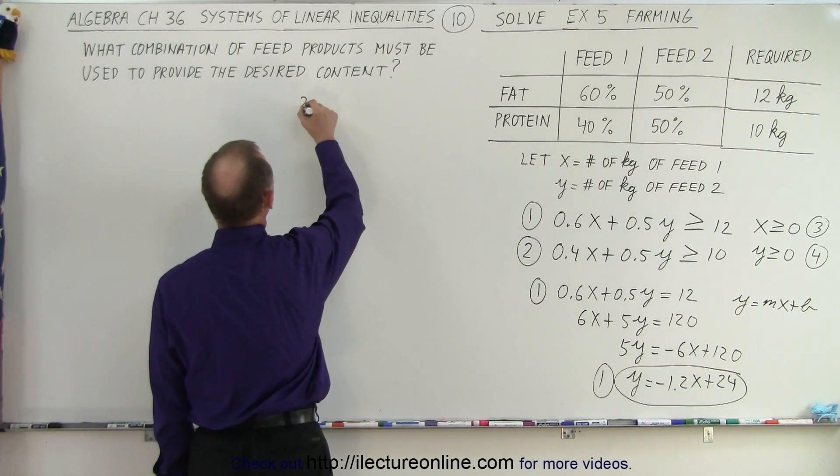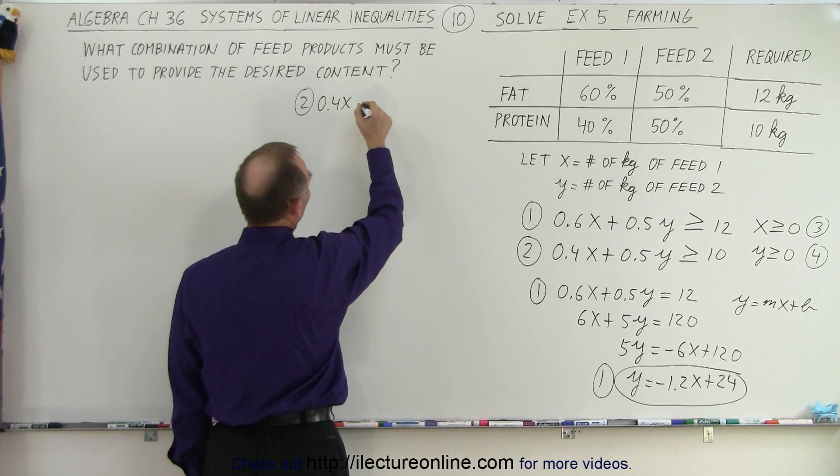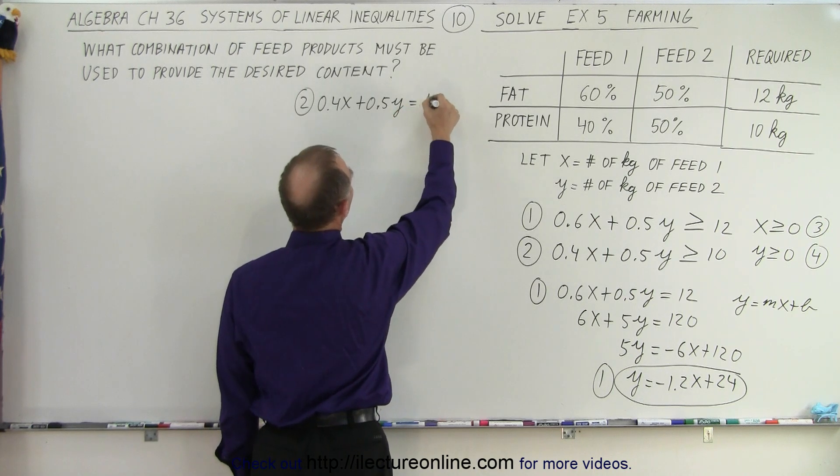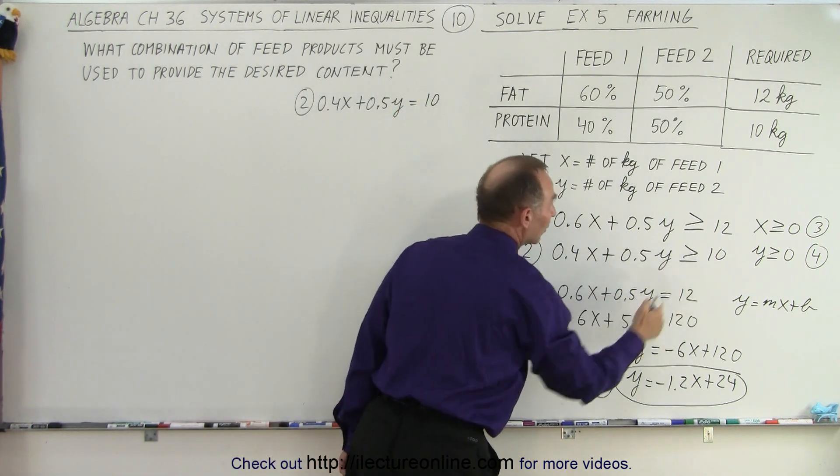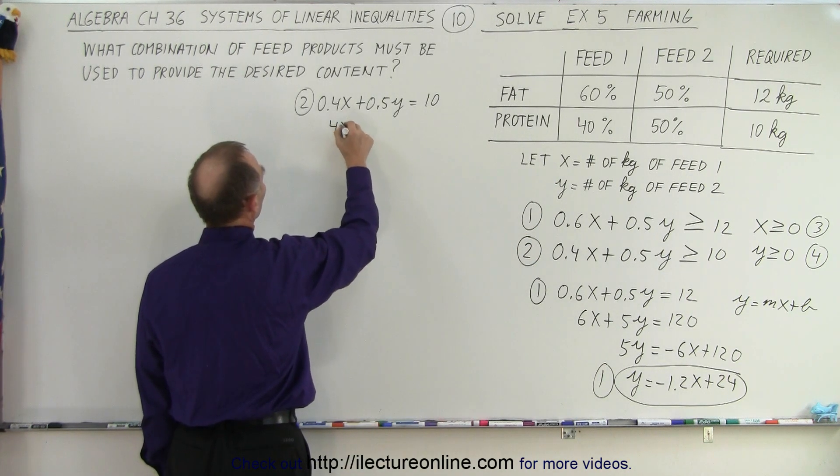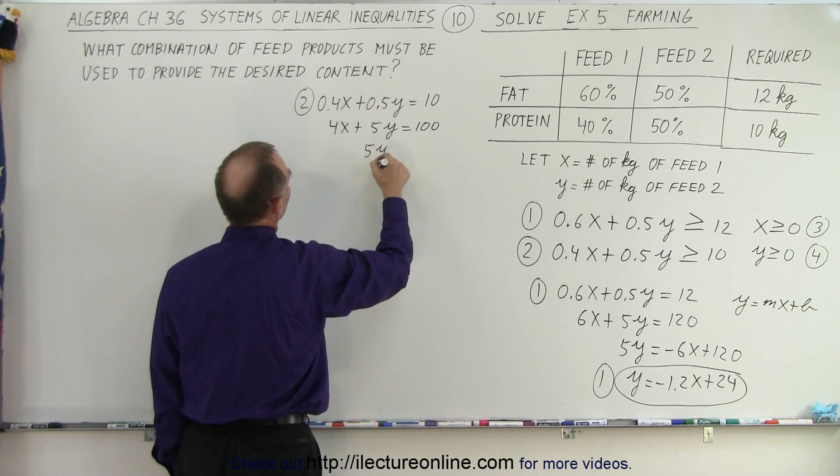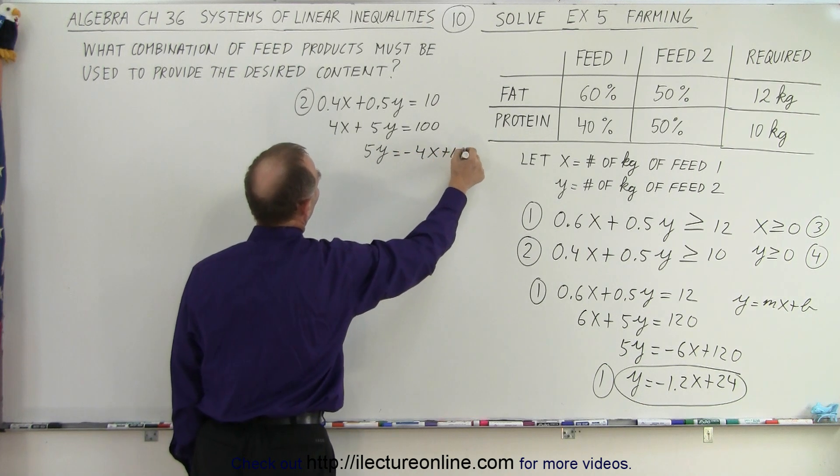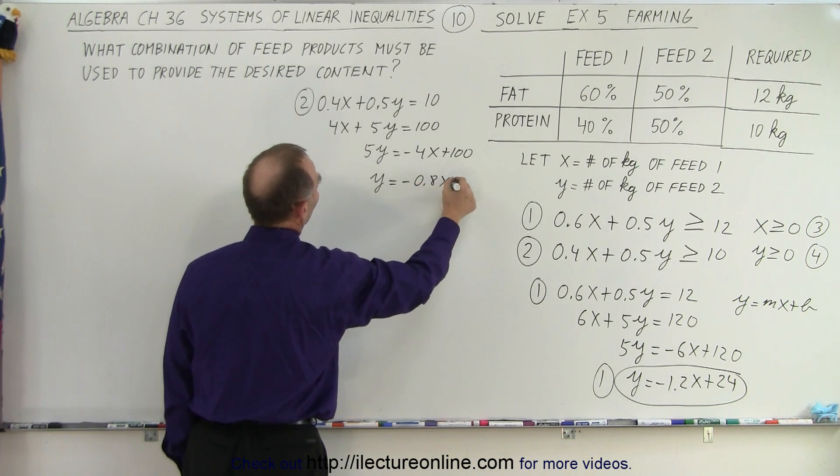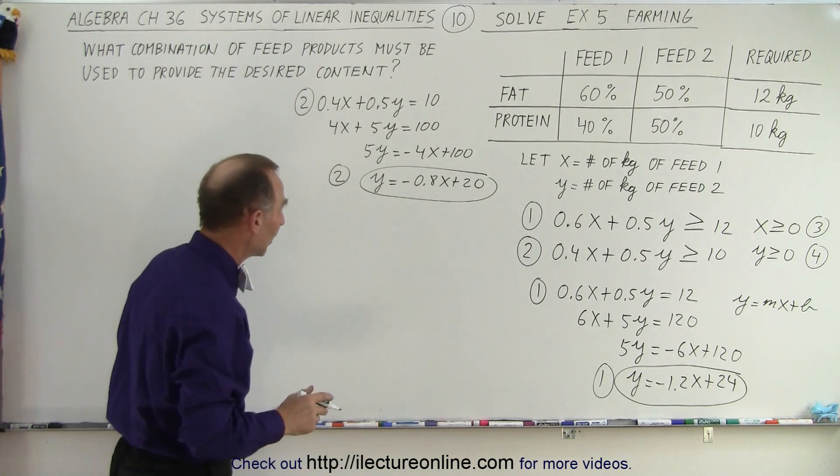So now we need equation number two. And we write this as 0.4x plus 0.5y is equal to 10. So we turn the inequality into an equal sign. Then we put that into y equals mx plus b format. First multiply everything by 10. 4x plus 5y equals 100. 5y equals minus 4x plus 100. Divide everything by 5. We get y equals minus 0.8x plus 20. And there's equation number two. And now we can go ahead and graph those two equations.